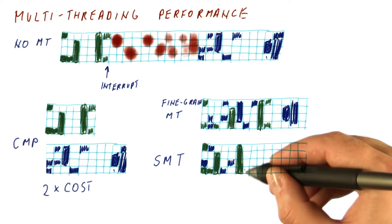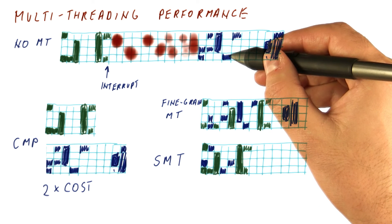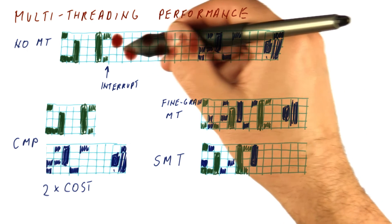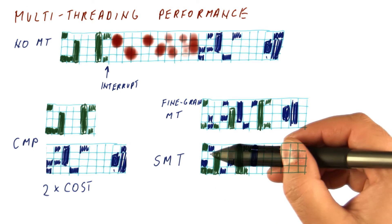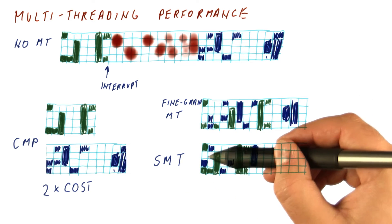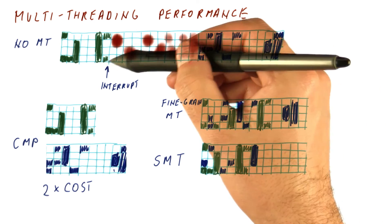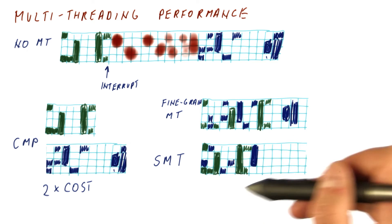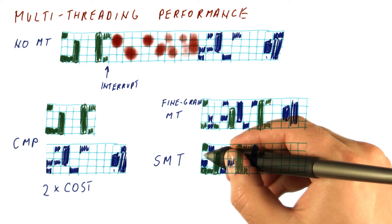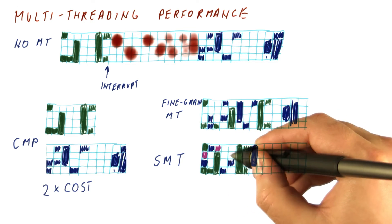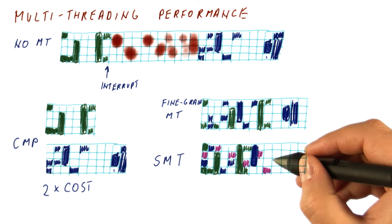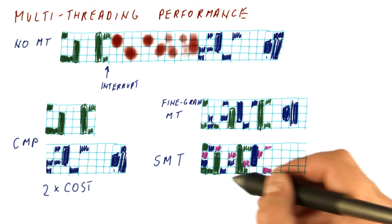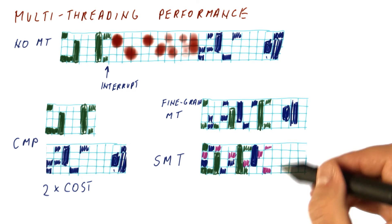With SMT, we get to populate unused issue slots in what would otherwise be a full-speed execution of the green thread, so the blue thread makes progress while the green thread does not suffer from it. We can do this for more than two threads — with four threads, we might run another thread at a slightly slower pace while doing all of this. SMT really uses underutilized issue slots in our out-of-order superscalar processor.